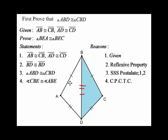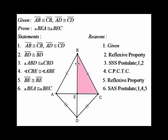So you can say that triangle ABD is congruent to triangle CBD by the Side-Side-Side postulate. Then by CPCTC, you can conclude that the two corresponding angles — angle ABE and angle CBE — are congruent. We're going to use that in the next step.